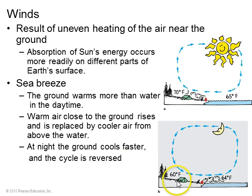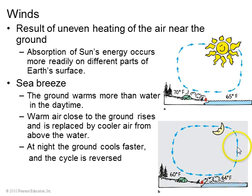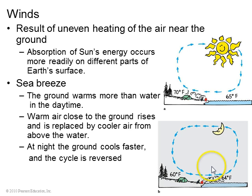At night, the ground cools faster than the water, again because of the high specific heat capacity of water. The air becomes cooler over the land and falls. Over the water, air is at a higher temperature and is buoyed upwards, creating an onshore breeze.